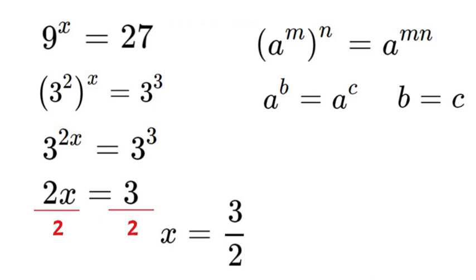And that's the final answer, but we can go ahead and check our answer real quick. So we got 9 to the power of 3 over 2 is equal to 27. Now an easier way to solve this than trying to figure out 9 to the power of 3 over 2 is we can rewrite 9 as 3 squared to the power of 3/2.